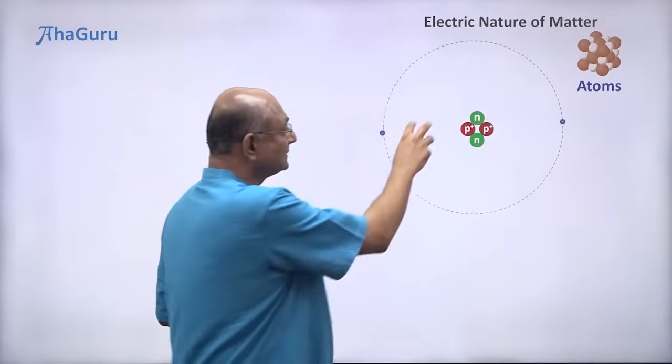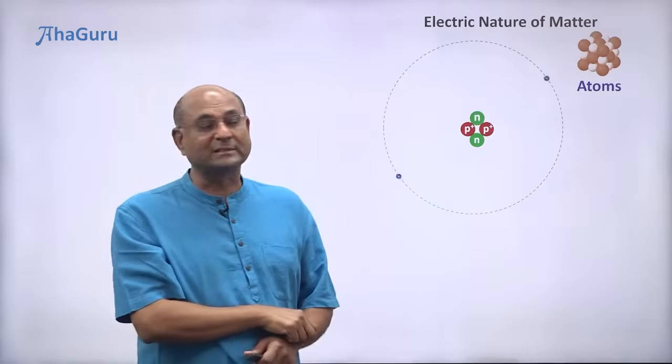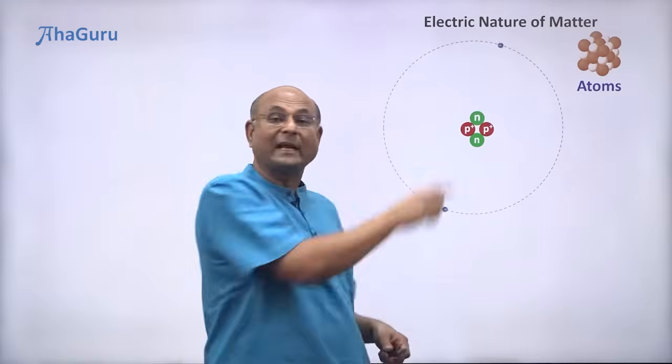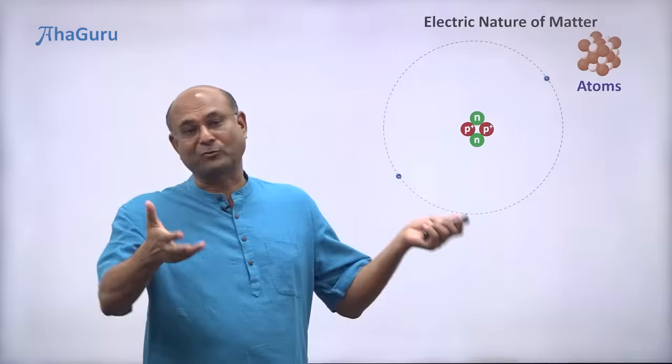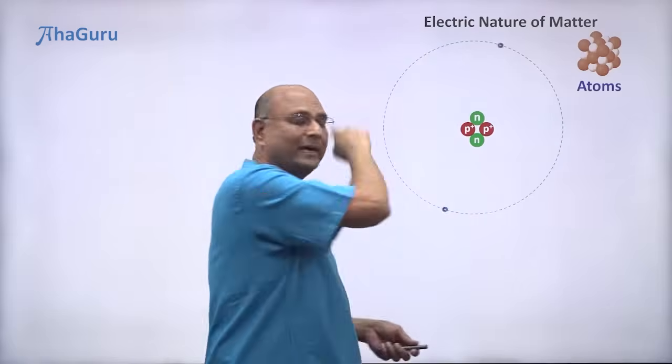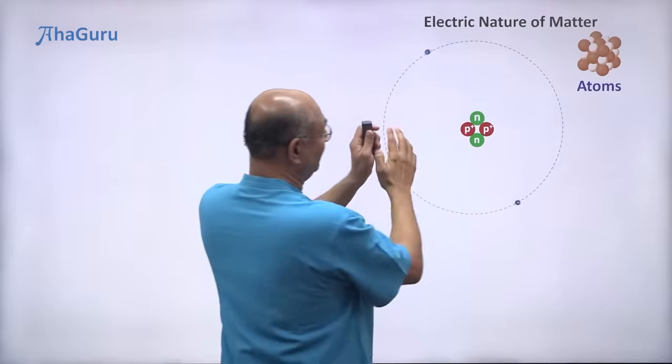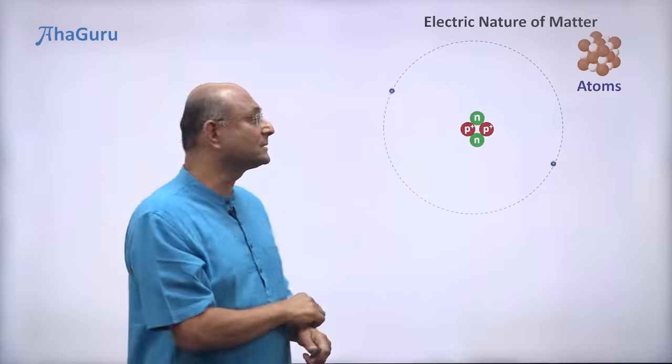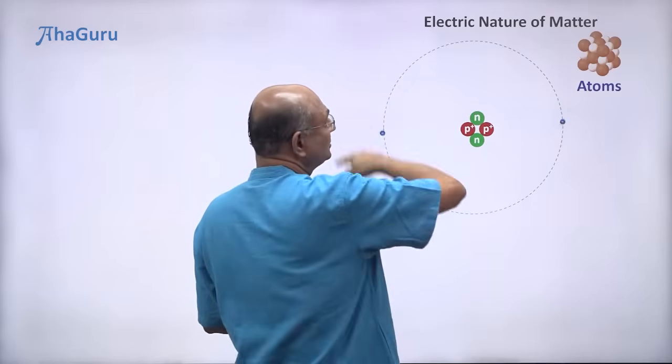And very far away, for example, if this was the size of the nucleus, I should be drawing these electrons several kilometers away. I can't draw that, so I've drawn it here. But you have to imagine that the electrons are very far away from the nucleus. So you have electrons roaming around.